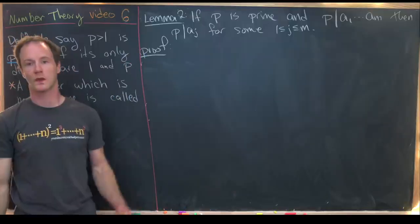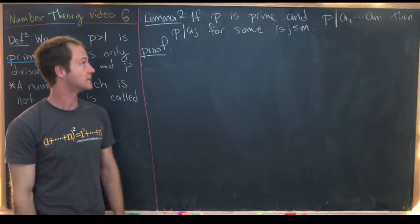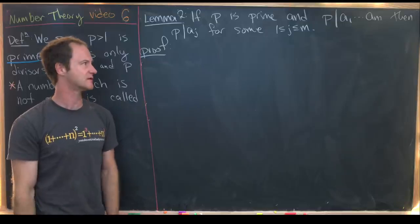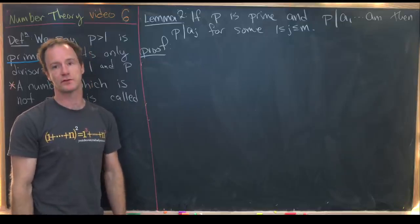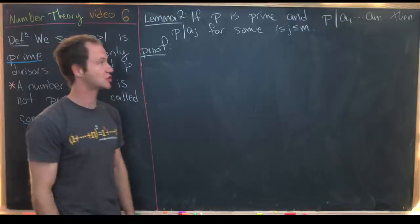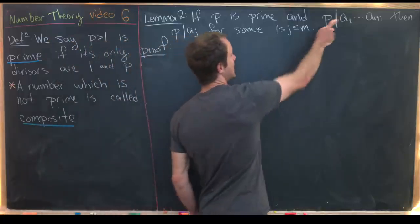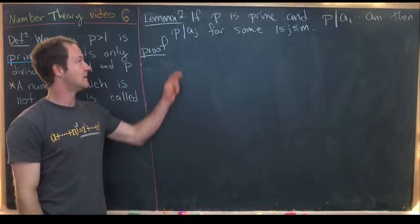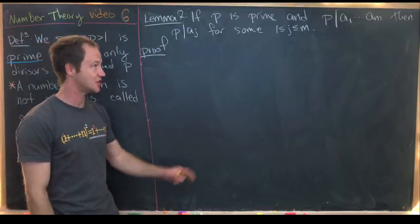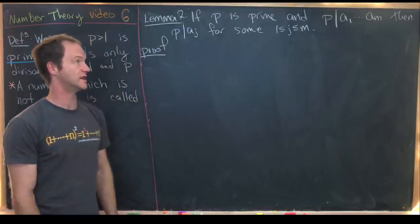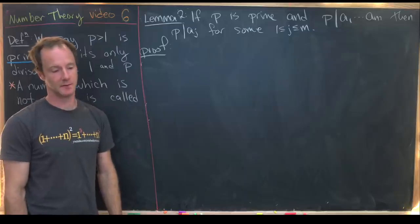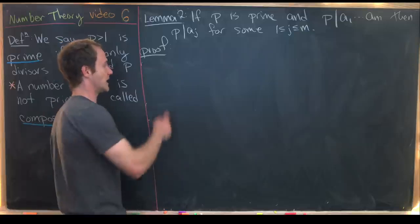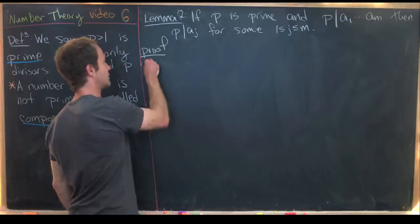Now we're ready for Lemma 2. Starting with a prime p and a collection of natural numbers a₁ through aₘ, we will show: if p divides the product a₁ times ... times aₘ, then p divides aⱼ for at least one j between 1 and m. This is a really important property of prime numbers. Let's dive into the proof.